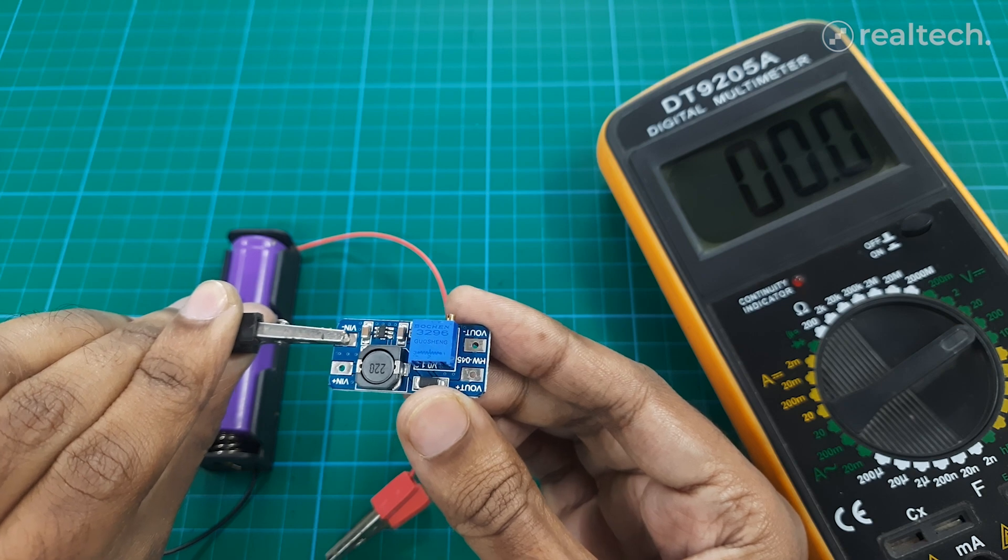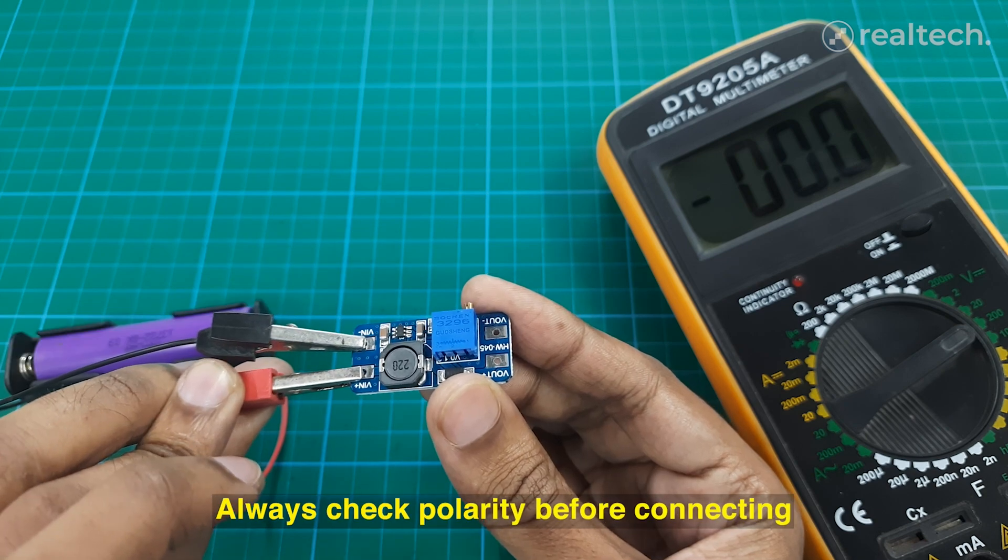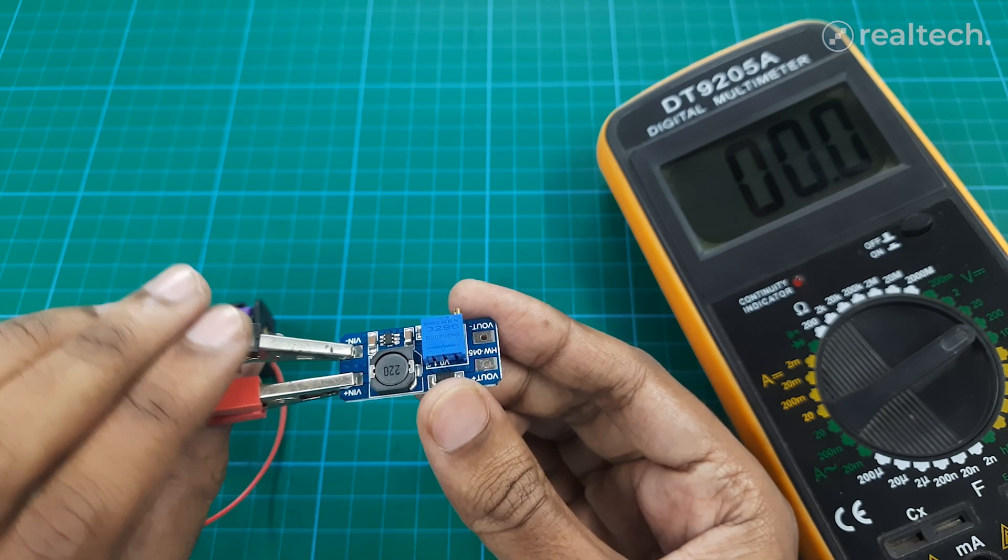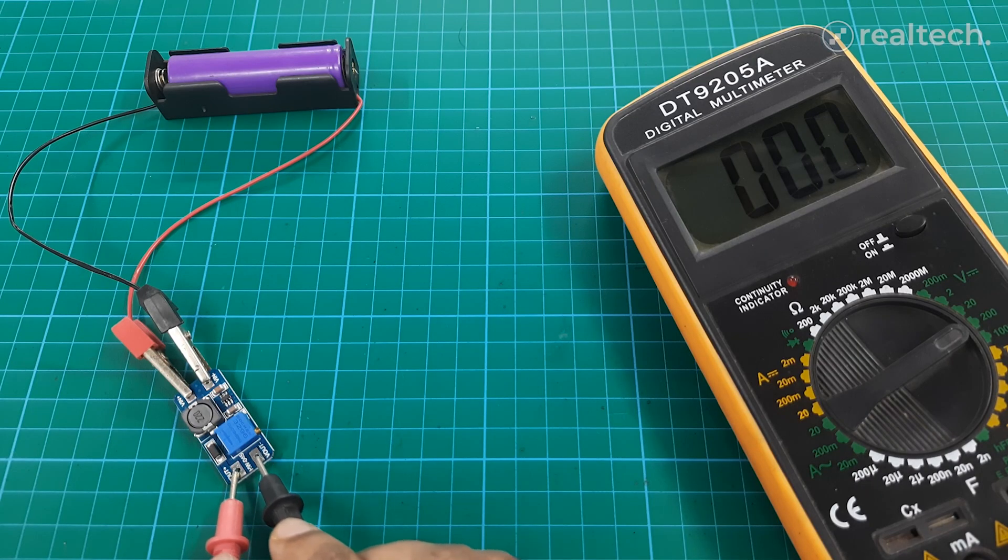When the switch is on, the inductor stores energy as a magnetic field. When it turns off, the collapsing magnetic field generates a higher voltage, which is transferred to the output.